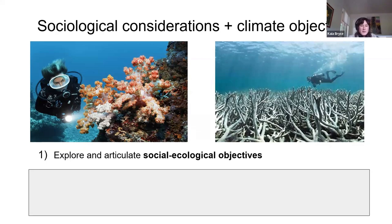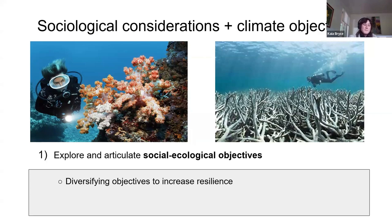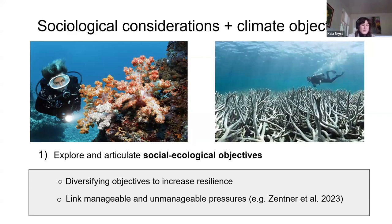In our paper, we explored two main suggestions to address findings around social considerations in MPA planning in tandem with developing climate change objectives. First, explore and articulate social ecological objectives within the planning framework. By spelling out a diversity of MPA objectives, including social ones, the MPA may be more likely to enjoy continuing support, even if climate impacts compromise certain specific objectives. Within the context of an MPA, there are manageable and unmanageable pressures. Local human pressures are more manageable than global climate pressures, but their impacts can be compounding. A good example is an MPA around a coral reef being degraded both by poor diving practices and deoxygenation associated with climate change, compromising both ecological objectives and social ones such as tourism appeal.